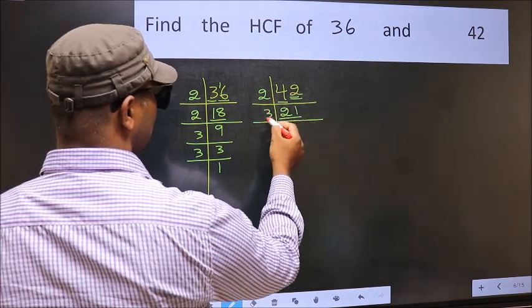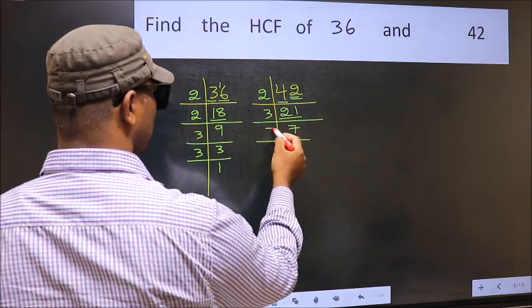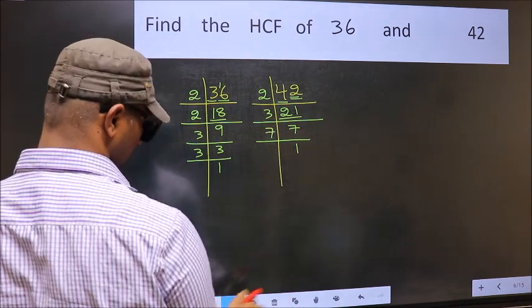Now 21 is 3, 7's 21. 7 is a prime number, so 7, 1's 7.